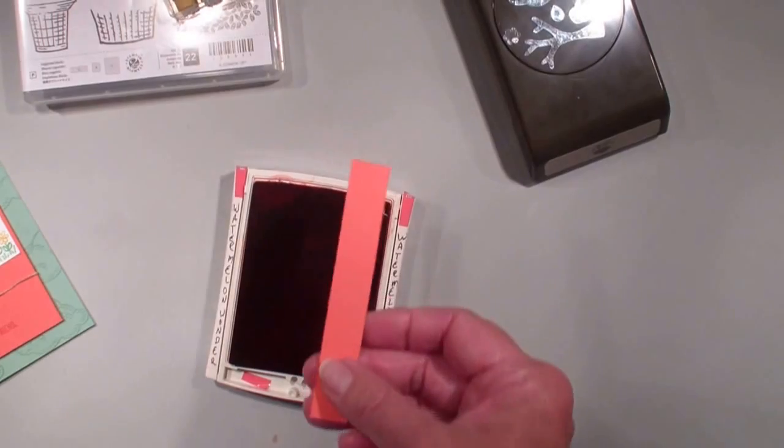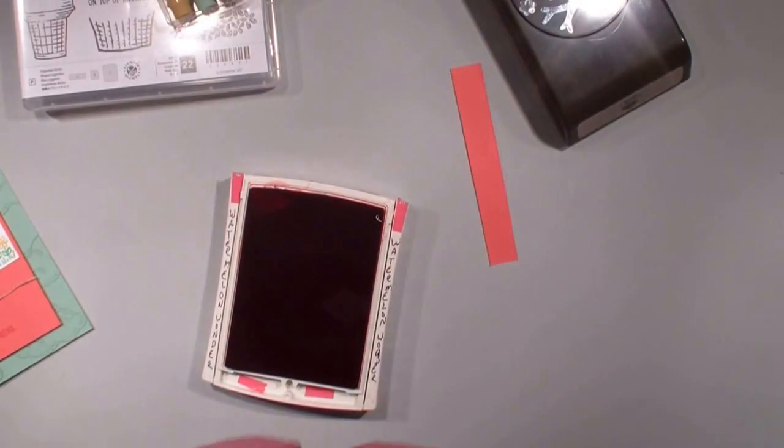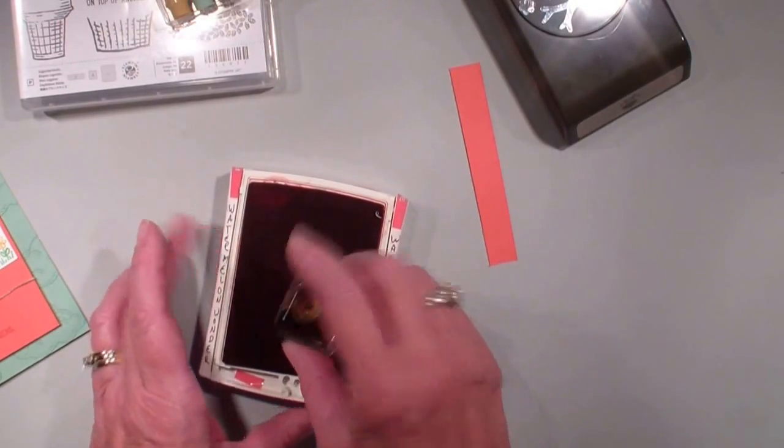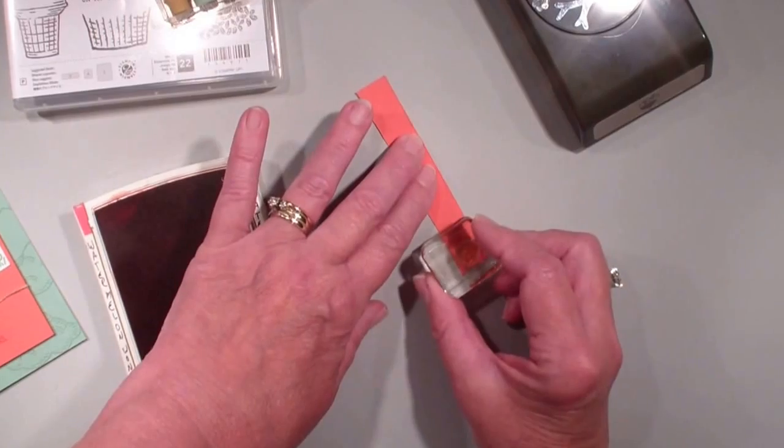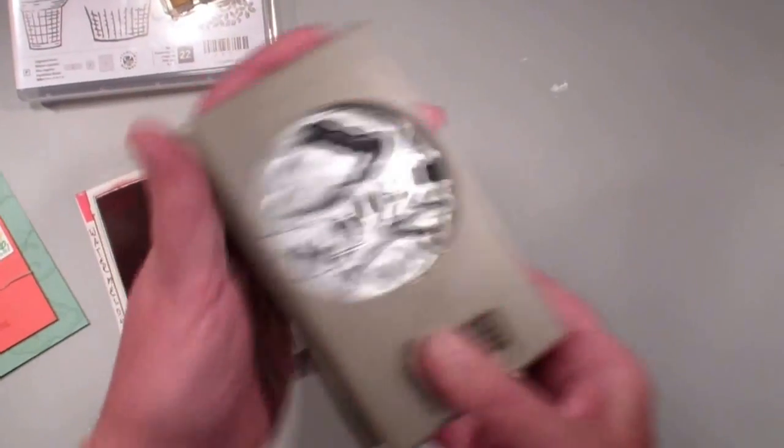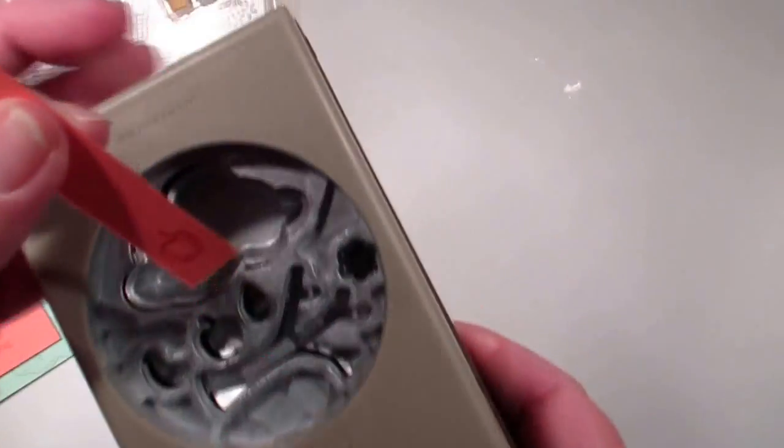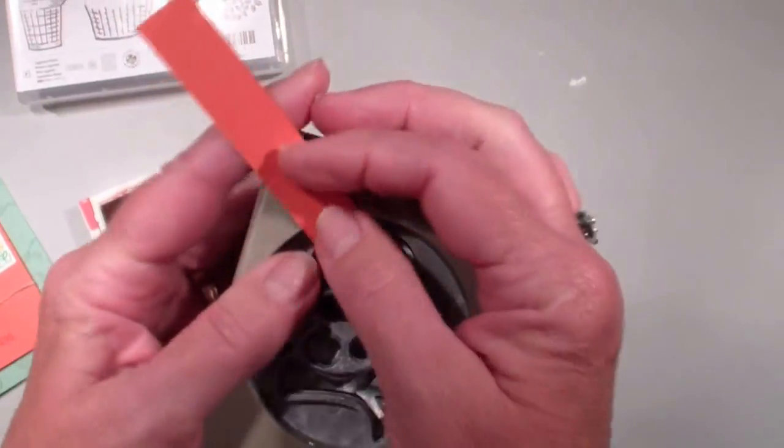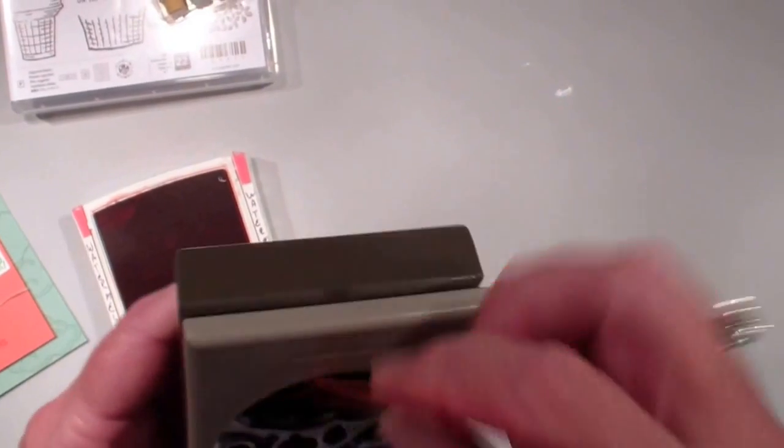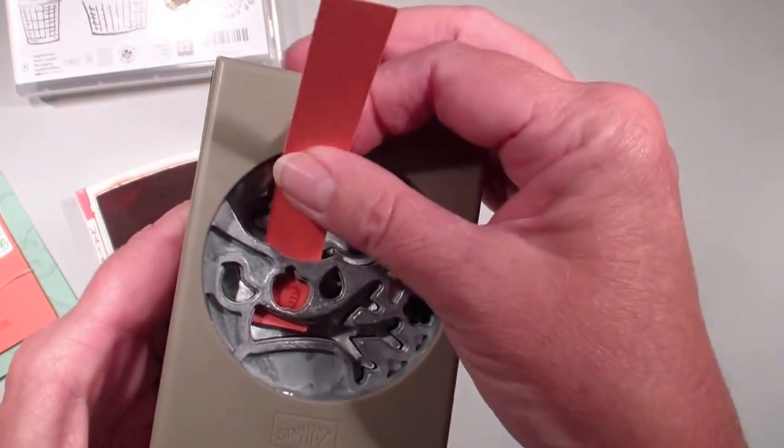I am just bringing a half inch strip of the Watermelon Wonder. Again, this is one of the new in-colors. I am going to stamp that apple, open my punch and I am going to take that half inch piece and I am just going to feed it through my punch like so and line it up.